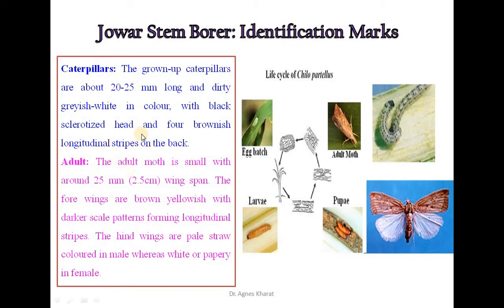The adult moth is small with around 25 mm wingspan. The 4 wings are brownish-yellow with darker scale patterns forming longitudinal stripes. The hind wings are pale straw colored in male, whereas white or peppery in female.